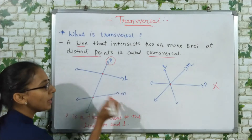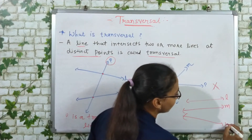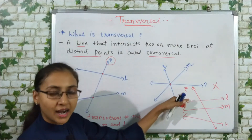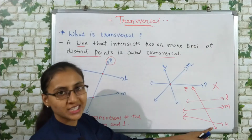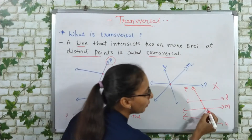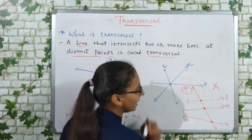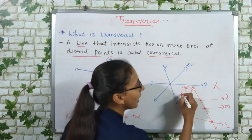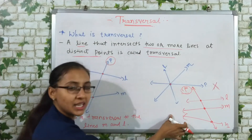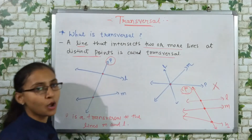Now suppose we have three lines: l, m, and n. If we draw a line p such that it intersects all three at three distinct points — intersecting l at one point, m at another point, and n at yet another point — then line p is the transversal of lines l, m, and n. So for two or more lines, as long as the line intersects them at separate distinct points, it is their transversal.